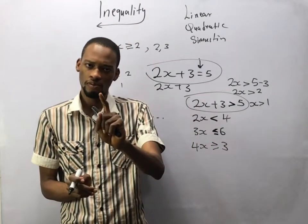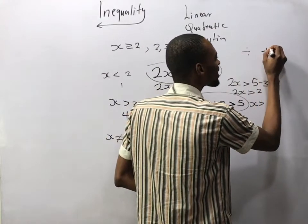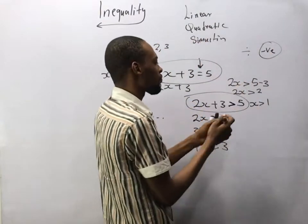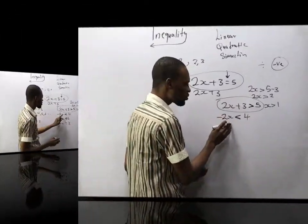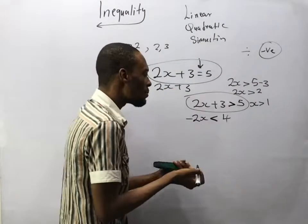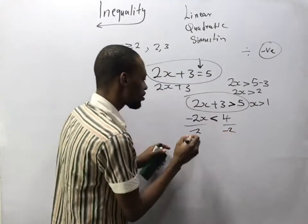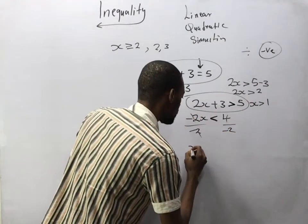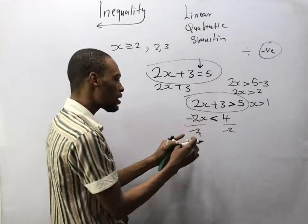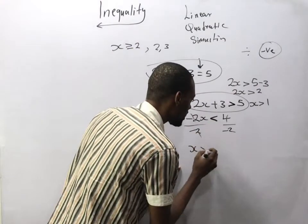There are some exceptions in inequality. If you divide both sides by a negative number, the sign changes. For example, given minus 2s is lesser than 4, dividing both sides by minus 2, since we divided both sides by a negative number, which is minus 2, the sign changes — lesser than becomes greater than. So s is greater than minus 2.